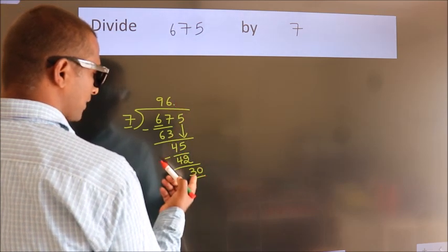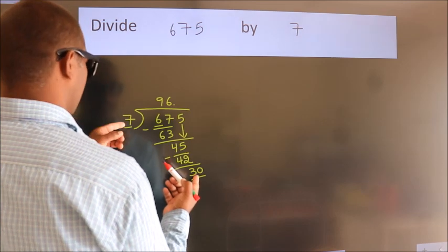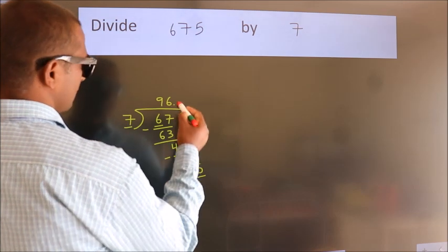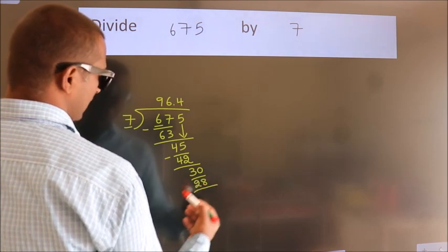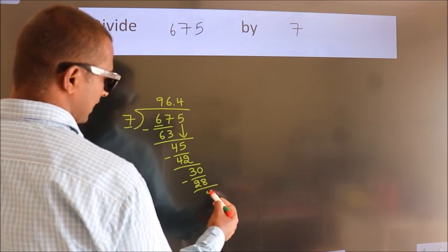So 30. A number close to 30 in the 7 table is 7 fours, 28. Now we subtract. We get 2.